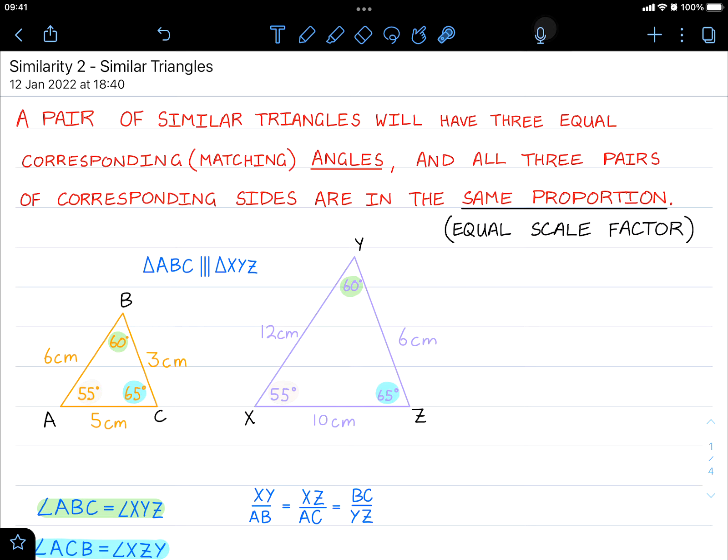A pair of similar triangles will have three equal corresponding or matching angles and all three pairs of corresponding sides are in the same proportion. This is just another way of saying that they have equal scale factor.